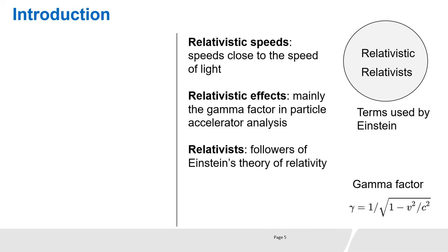Relativistic speeds are speeds that are close to the speed of light. Relativistic effects refer mainly to the gamma factor which is present in particle accelerator analysis or in the relativistic Doppler formula. Relativists are followers of Einstein's theory of relativity.